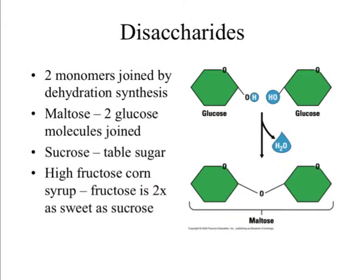Now let's get more complicated with carbohydrates. Monosaccharides are the building blocks — the monomers — of carbohydrates. When we bring two monosaccharides together via dehydration synthesis, we form a disaccharide, because the prefix 'di' means two. If we join two glucose monosaccharides together, we make a bigger sugar called a disaccharide. This particular disaccharide is called maltose — if you see maltose in ingredients, it's two glucose monosaccharides joined together.